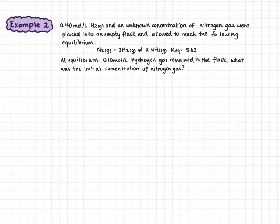In our next example, 0.40 moles per liter of hydrogen gas and an unknown concentration of nitrogen gas were placed into an empty flask and allowed to reach the following equilibrium: nitrogen plus hydrogen in equilibrium with ammonia, with a Keq value of 5.62. At equilibrium, 0.10 moles per liter of hydrogen gas remained. What was the initial concentration of nitrogen gas?